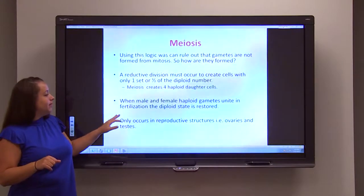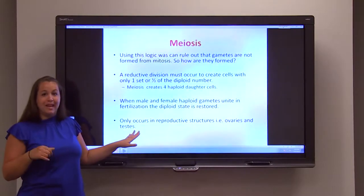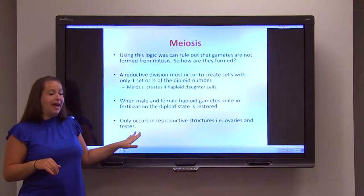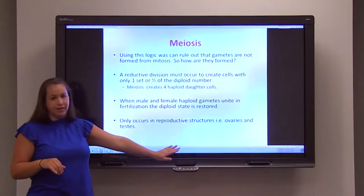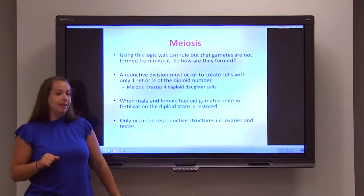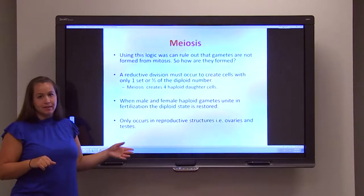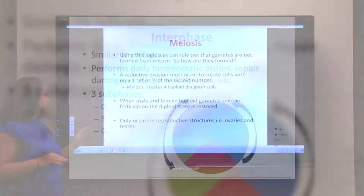Since meiosis only occurs to form gametes, it only happens in reproductive structures — you only find it happening in the ovaries and the testes, nowhere else in the body.